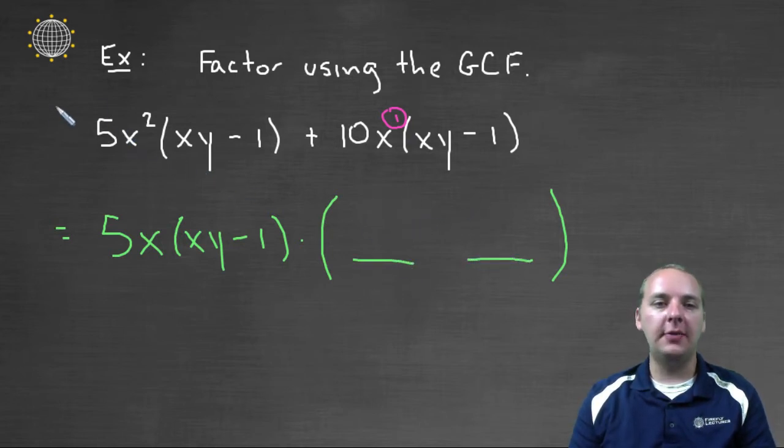Well the 5 has been factored out, and so 5 times 1 is 5. X times what would give us x squared? Well we just have an x. And xy minus 1 times what would give us an xy minus 1? We just have a times 1. So we'll just leave it x.